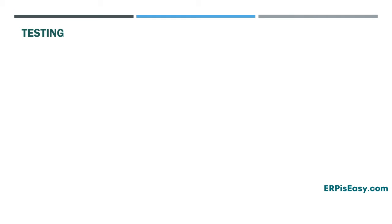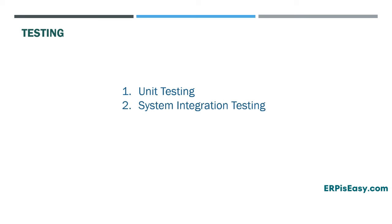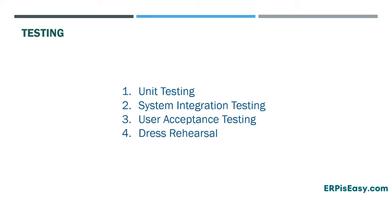The next phase is the testing phase, which is one of the most important phases of an SAP project. There are four different types of testing: unit testing, system integration testing (also known as SIT), user acceptance testing (or UAT), and finally, dress rehearsal.